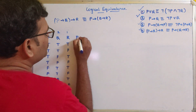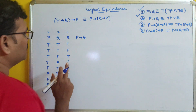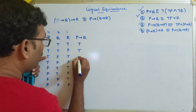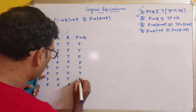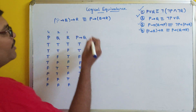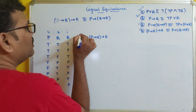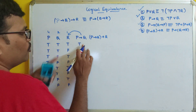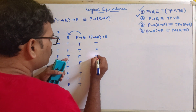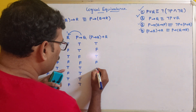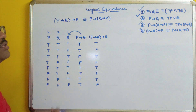Now we calculate P implies Q. If P is true and Q is false, it is false; otherwise true. Results for all eight rows: true, true, false, false, true, true, true, true. Then we calculate P implies Q implies R — applying the implication to P and the previous result: true, false, true, false, true, false, true, false. Next we calculate Q implies R: true/true is true, true/false is false, false/true is true, false/false is true — giving: true, false, true, true, true, true, true, true.